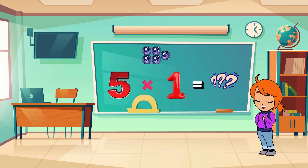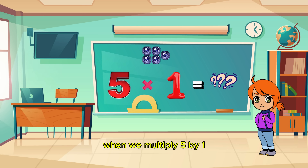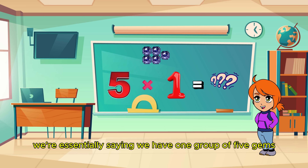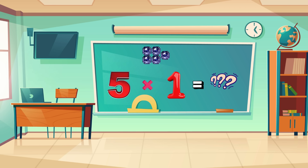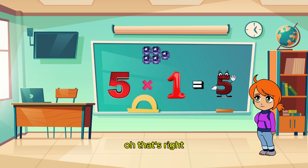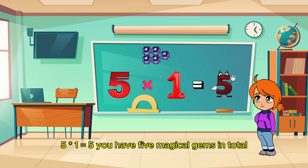Let's start with 5 times 1. When we multiply 5 by 1, we're essentially saying we have 1 group of 5 gems. How many gems do we have in total? That's right — 5 times 1 equals 5! You have 5 magical gems in total!